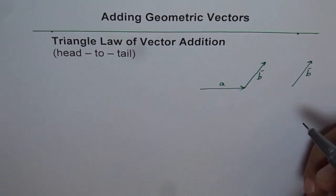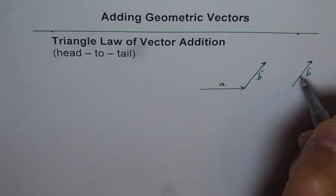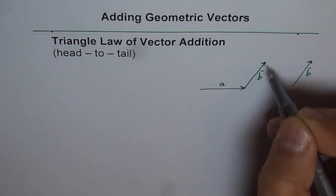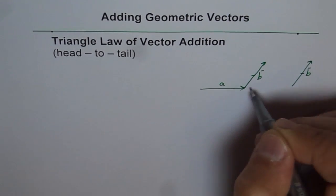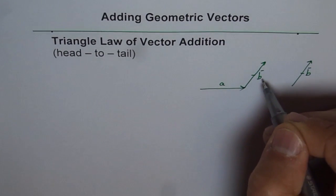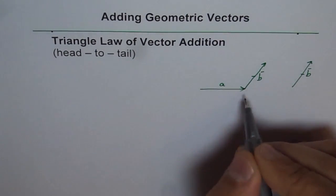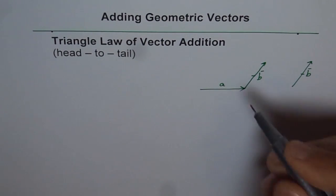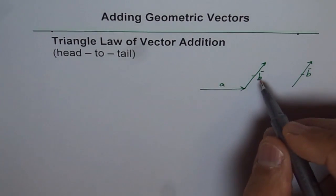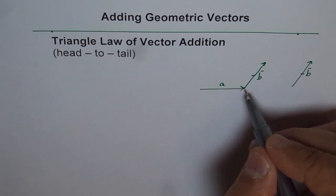As you know, two vectors are equal if their magnitude is the same and their direction is the same. So if these magnitudes are the same and the direction is the same, they are the same vectors. So we get vector A and vector B such that the tail of vector B is on the head of vector A.